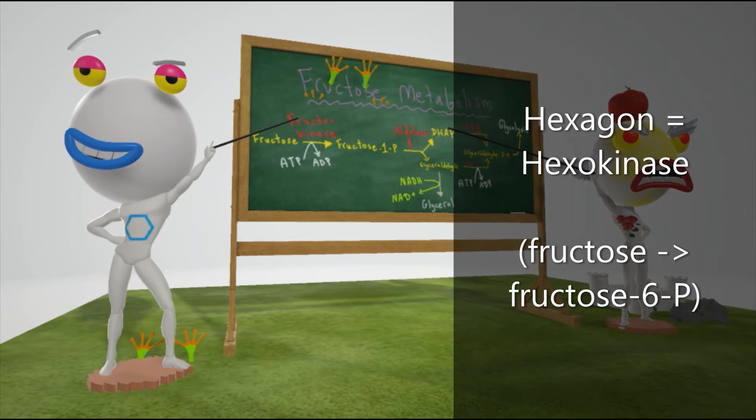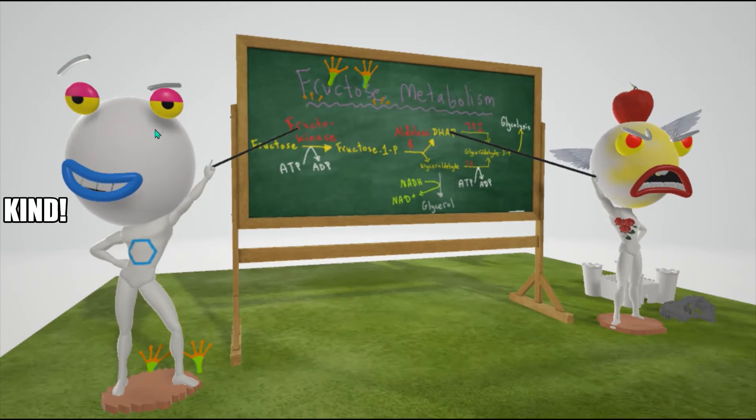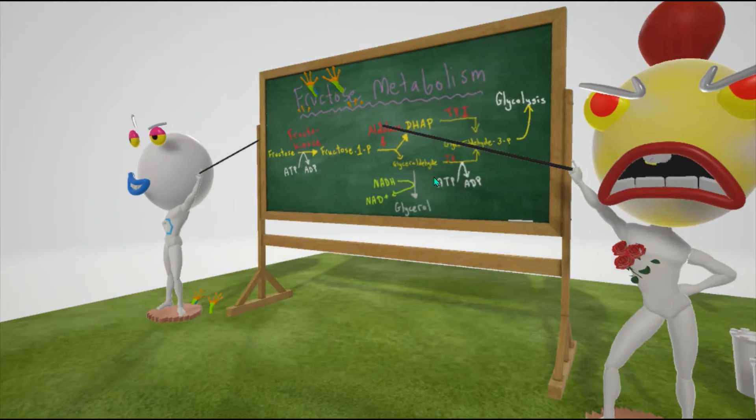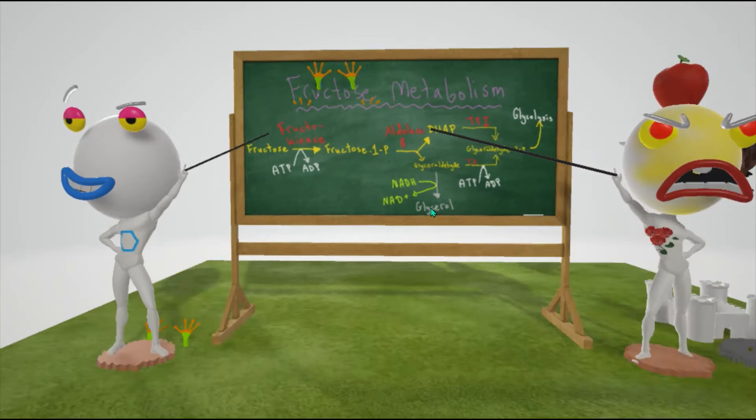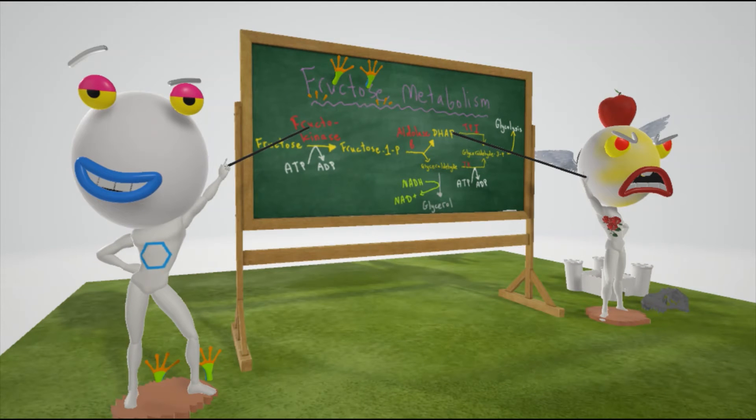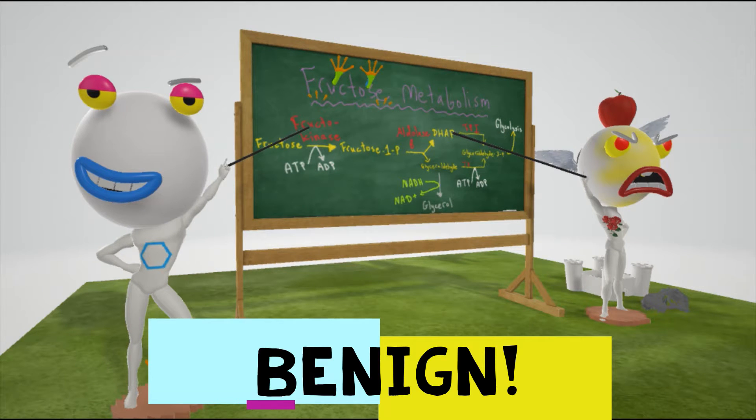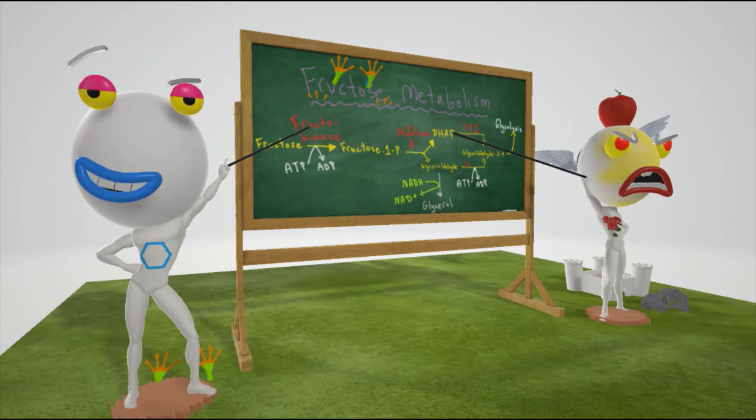Why does he have a hexagon on his chest over here? This is because hexokinase now becomes the primary pathway for converting fructose to fructose 6-phosphate. This teacher is actually quite kind, much kinder than this teacher over here. This teacher is very intolerant, representing hereditary fructose intolerance. But he's kind, and that's because essential fructosuria is benign.